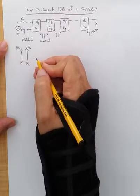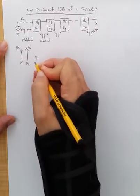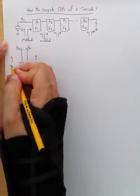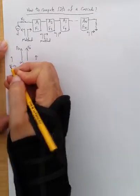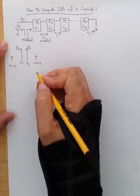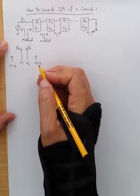That second order intermod will generate a couple of components, mainly omega 1 plus omega 2 and omega 1 minus omega 2 plus some DC and some higher frequency components, let's say two omega 2 and two omega 1 and DC.